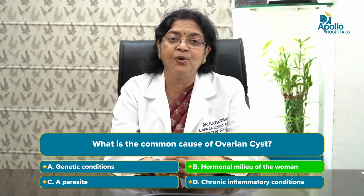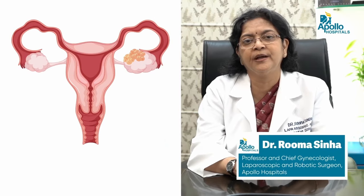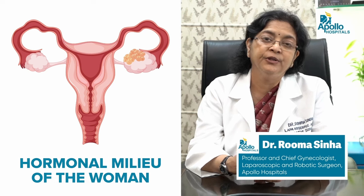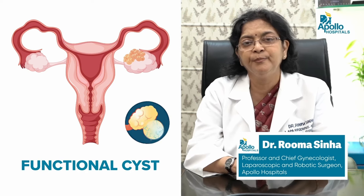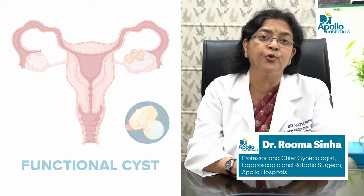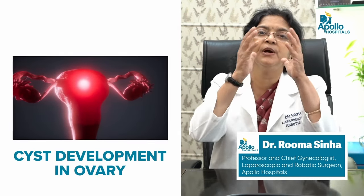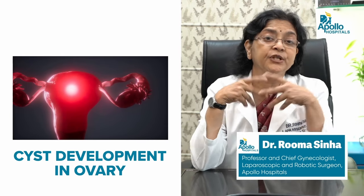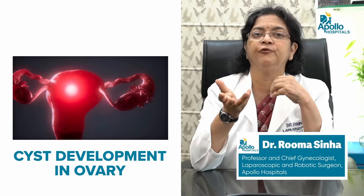The ovarian cyst can be caused by various factors. The commonest factor is the hormonal milieu of the woman. These are called follicular or functional cysts — because of abnormal follicular development due to hormonal abnormality, the ovaries may develop some kind of cyst. They may also develop a corpus luteum cyst as an after-effect of ovulation. These are all hormone-related cysts and they soon disappear. The other type of cysts can develop because of tumor, which can be both cancerous or non-cancerous.